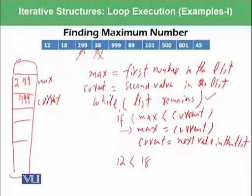If 299 is less than 999, so the condition is true. So this true means 999 will become the max and current will be moved to 89.